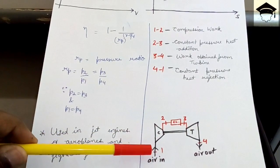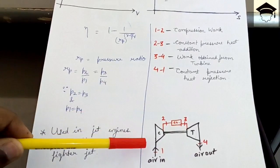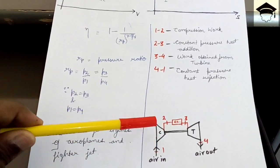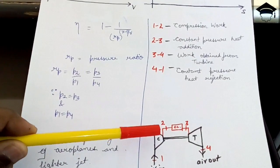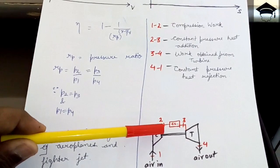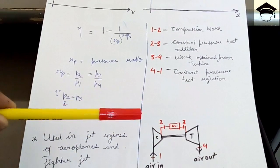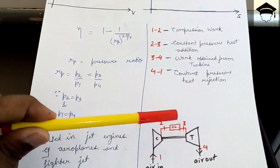The air is taken from the atmosphere, it is compressed from one to two in the compressor. From two to three heat is added with the use of fuel, from two to three combustion is there.